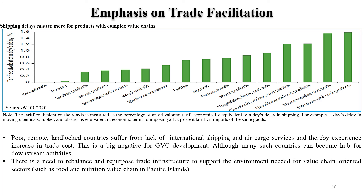Shipping delays are more pronounced for products which have complex value chains, for example automobiles, food products, and chemicals, because there may be a lot of conditions, standards, licensing, and quality parameters which are very important. Streamlining those policies can actually help to improve the trade facilitation structure in general.